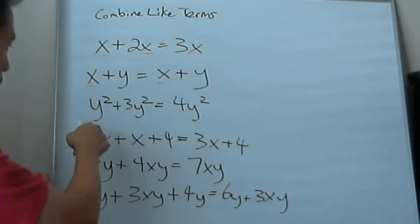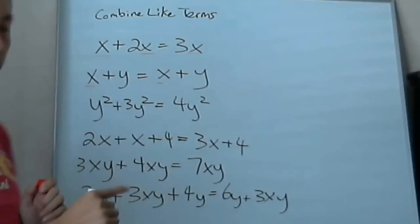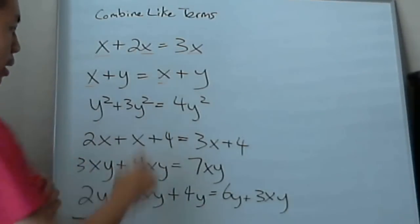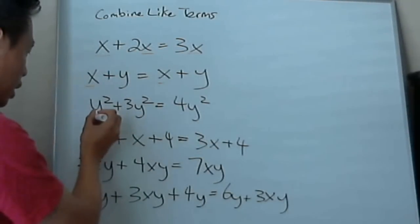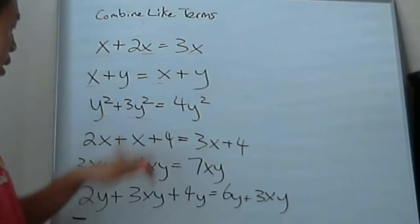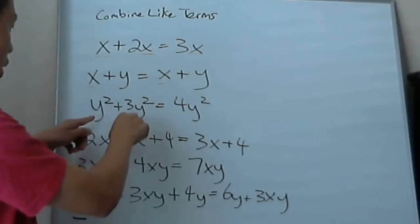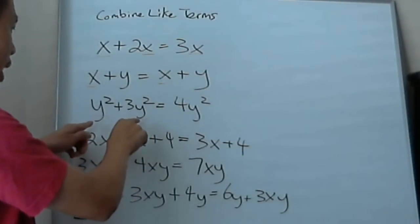So the next example I'll show you is y squared plus 3y squared. So you get two of the same terms. See, they're the same. When they're the same elements, you can combine them, but only when they're the same.